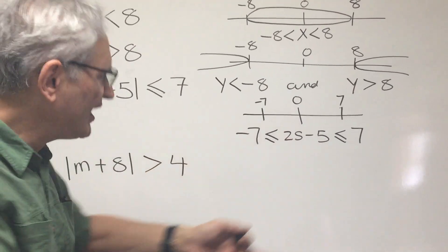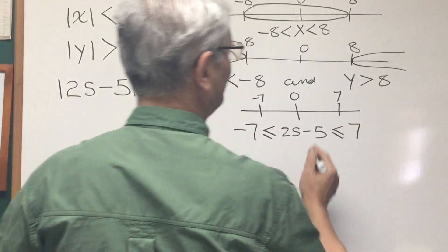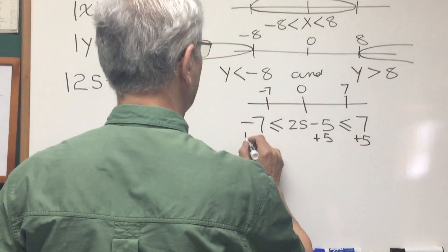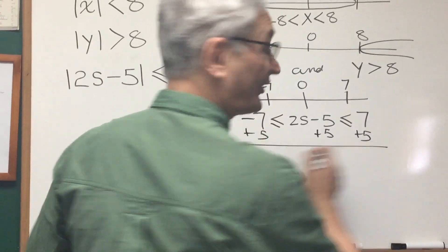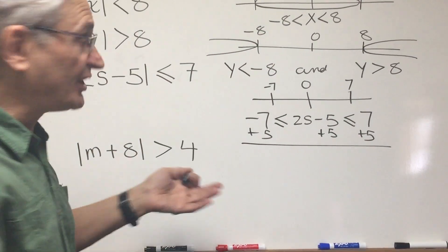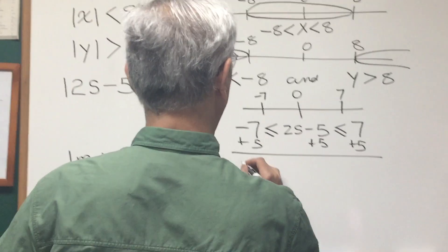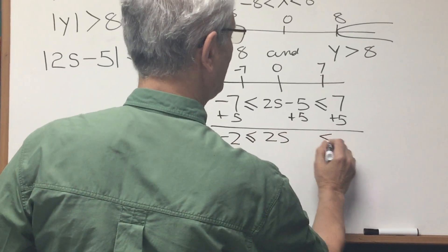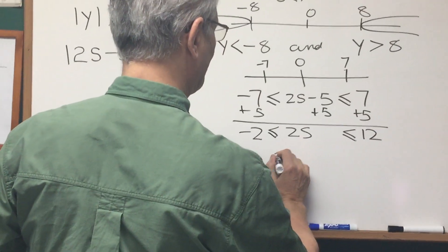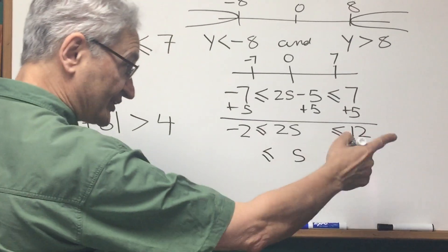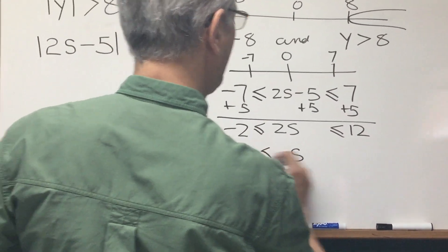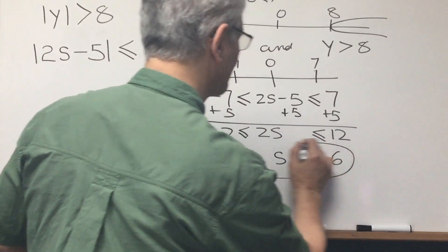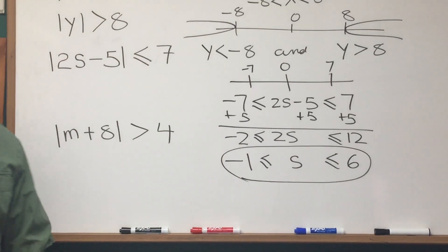Now what we have to do is solve for s, and we do that by the standard methods. Let's add 5 to all three sides of the inequality. Here we have an inequality with three sides instead of the usual two in an equation. So negative 7 plus 5 is negative 2, and we have 2s, and 7 plus 5 is 12. We divide both sides, all three sides, by 2, and we get s is between negative 1 and 6, and there is our solution to this inequality.